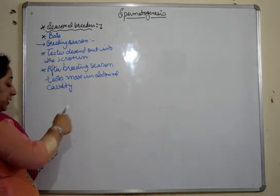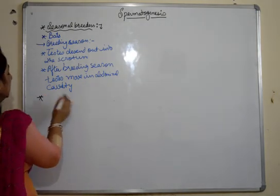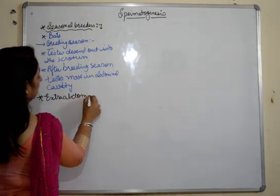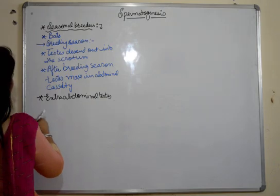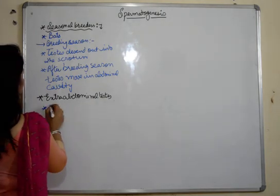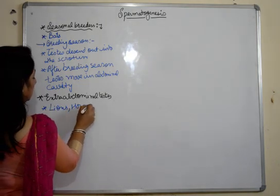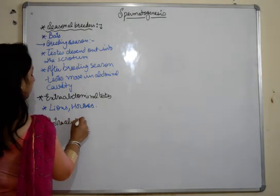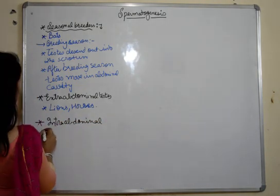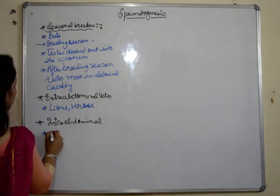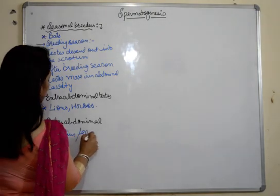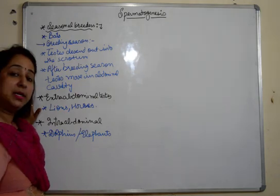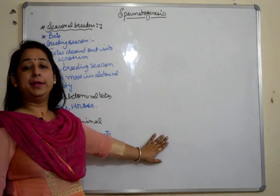In most organisms, the testes are extra-abdominal. Common examples include humans, cats, lions, and horses. Then there are a few organisms where the testes are intra-abdominal — they do not descend out into the scrotum. Examples are dolphins and elephants.